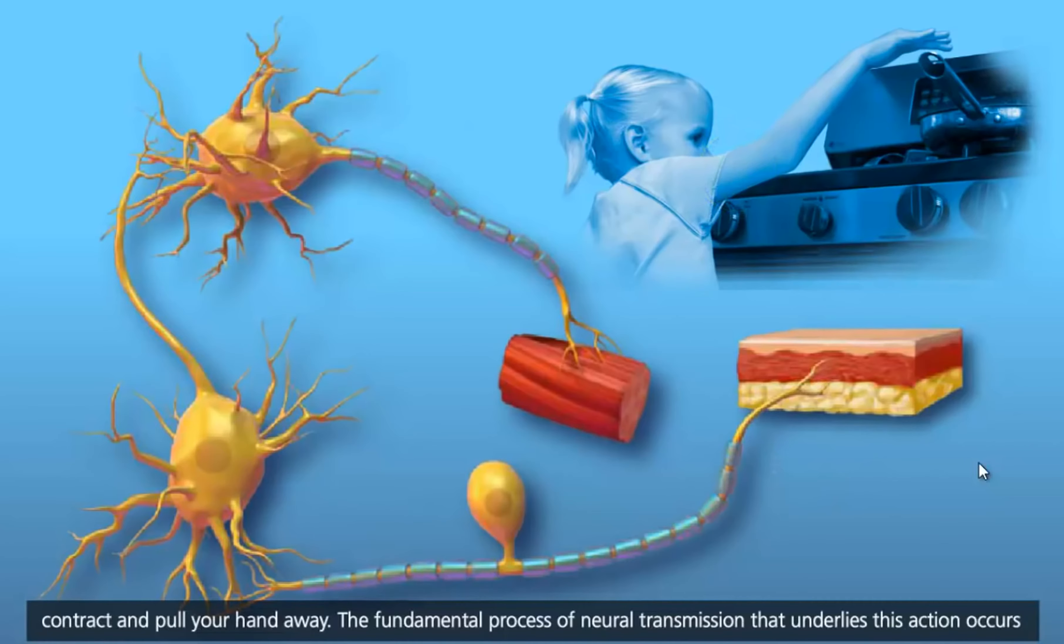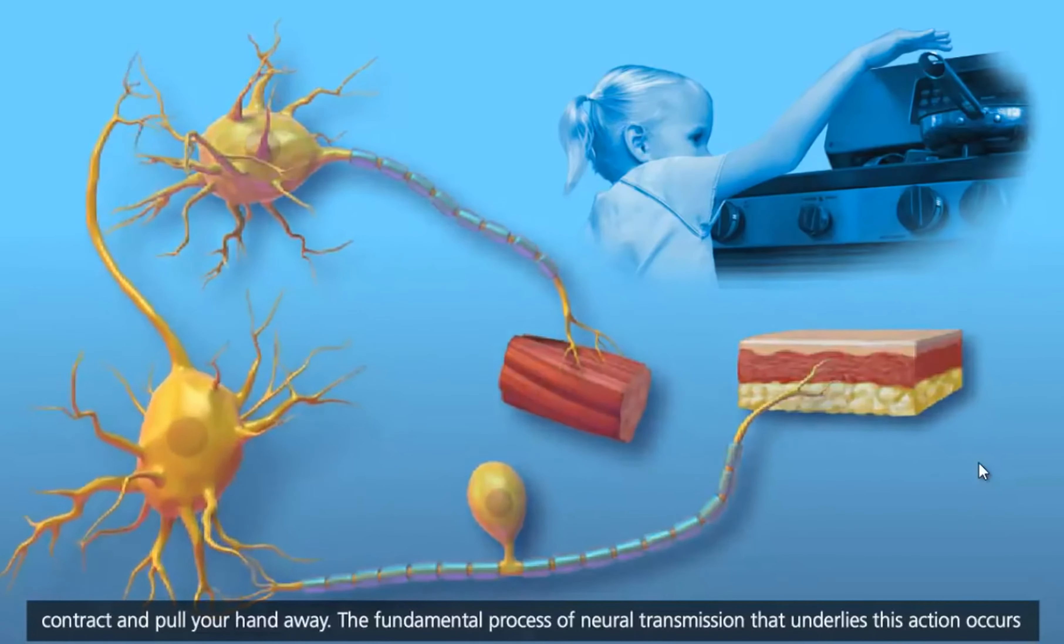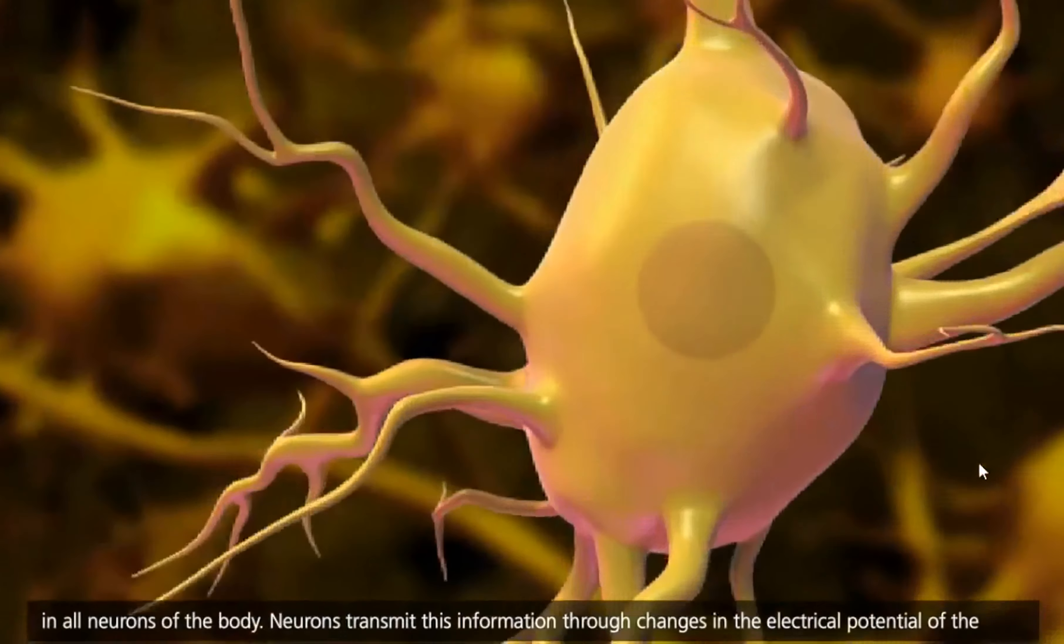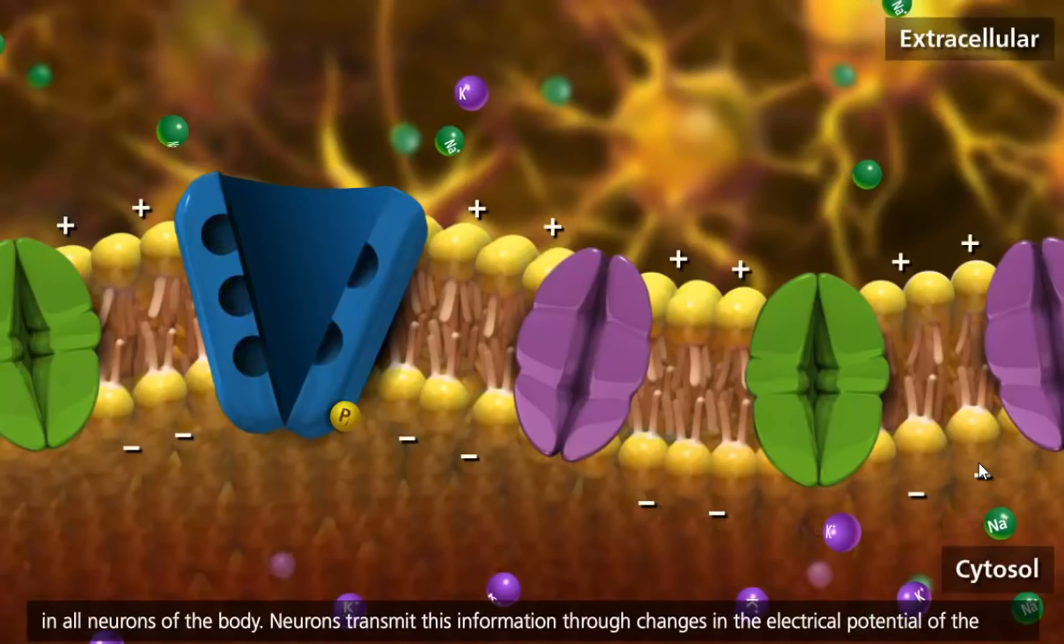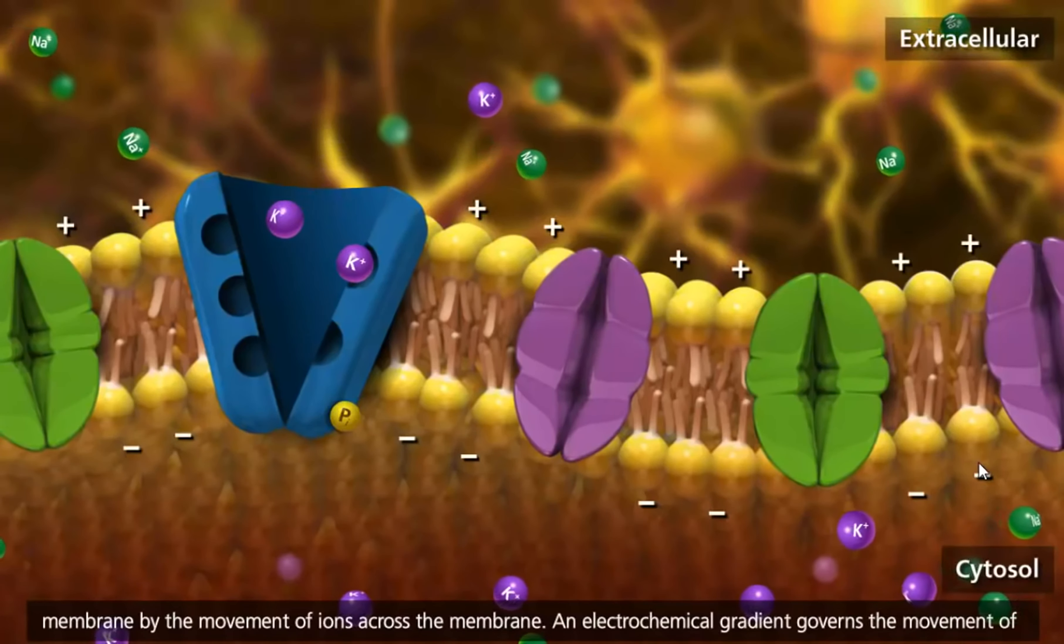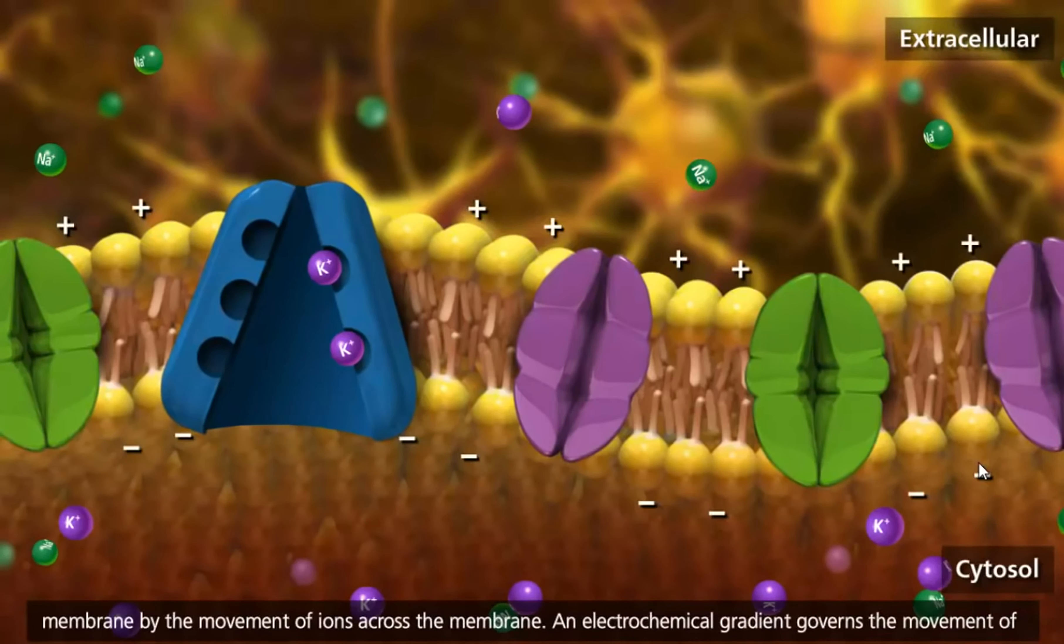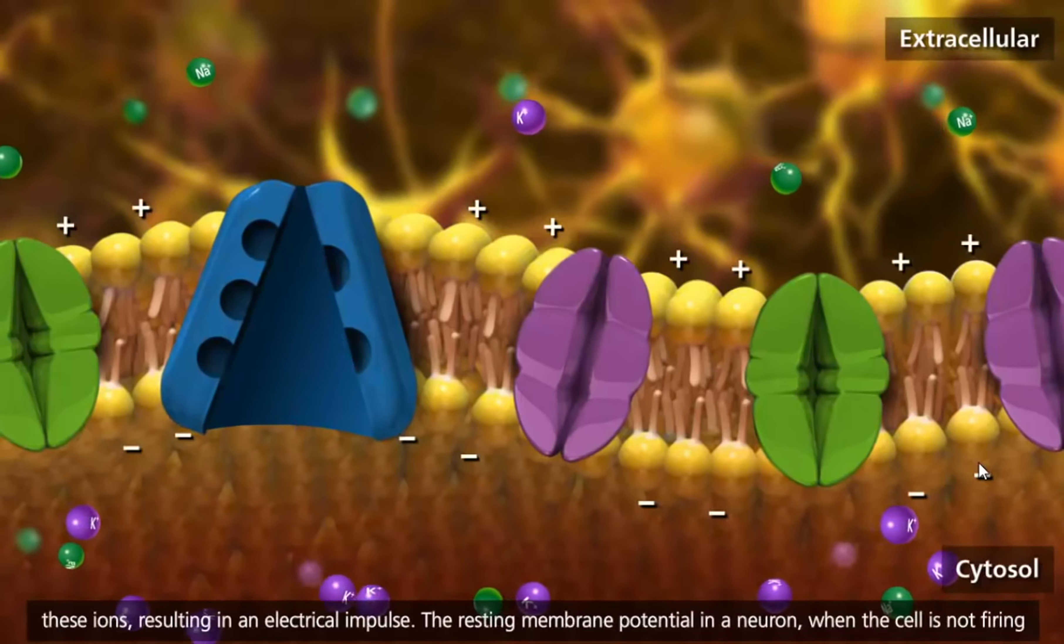The fundamental process of neural transmission that underlies this action occurs in all neurons of the body. Neurons transmit this information through changes in the electrical potential of the membrane by the movement of ions across the membrane. An electrochemical gradient governs the movement of these ions, resulting in an electrical impulse.